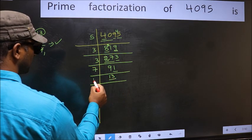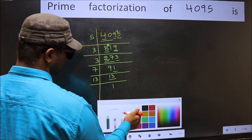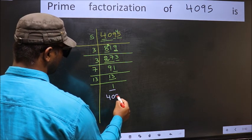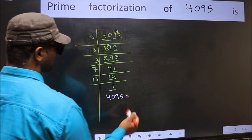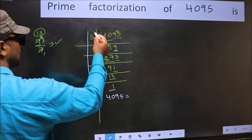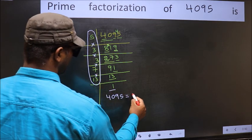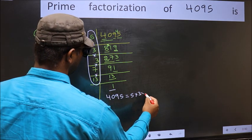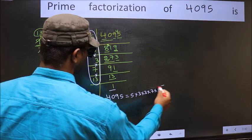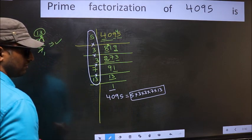Now we have 13. 13 is a prime number, so 13 once is 13, and we get 1 here. So the prime factorization of 4095 is the product of these numbers: 5 × 3 × 3 × 3 × 7 × 13. This is the prime factorization of 4095.